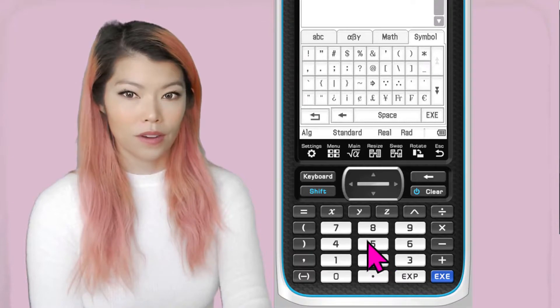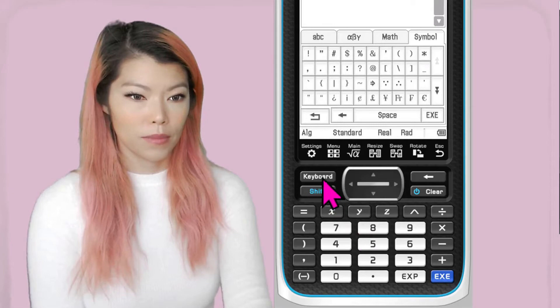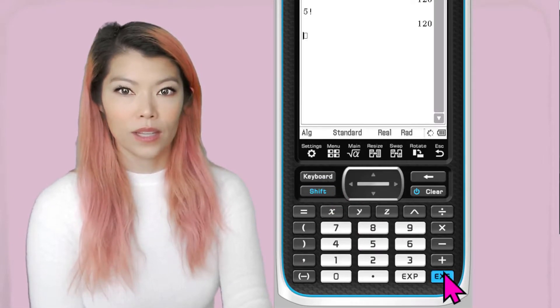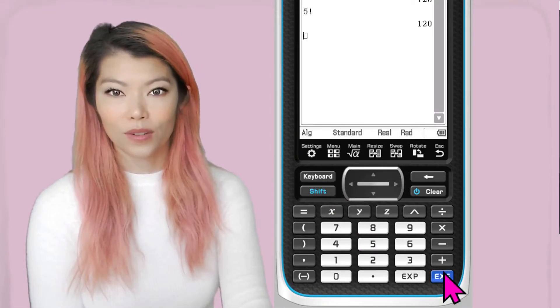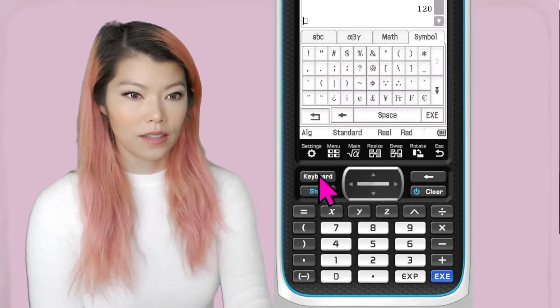So if we click on 5 factorial for instance and hit enter, let me get rid of Keyboard so you can see, we can see that we obtain 120.